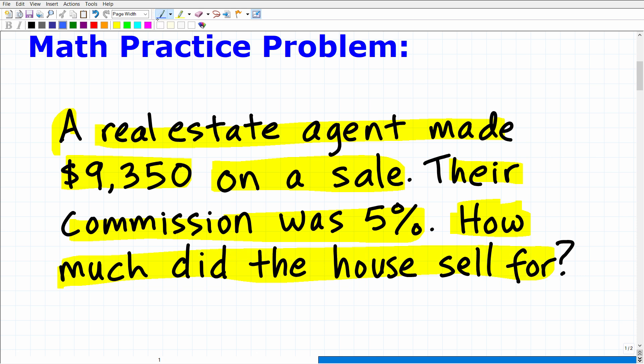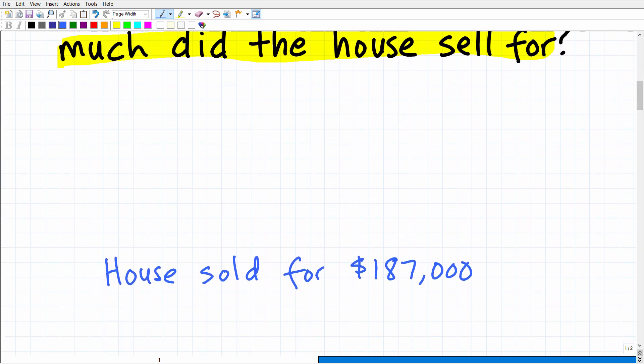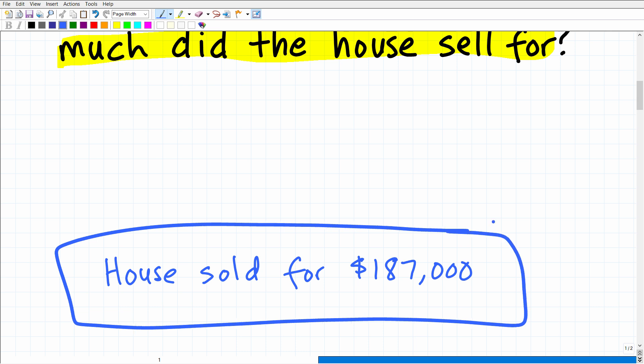How much did the house sell for? All right, so a pretty straightforward question, and I'm going to show you the answer right now. And feel free to use a calculator, but really, this particular question is a percent question, a percent math word problem. Let's go ahead and take a look at the answer. The answer is the house sold for $187,000.